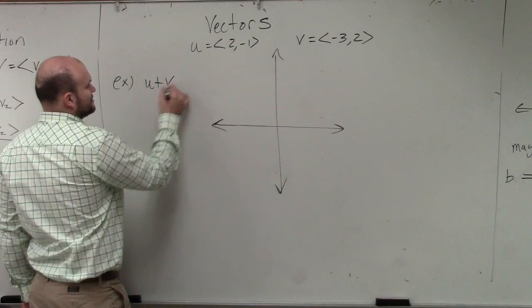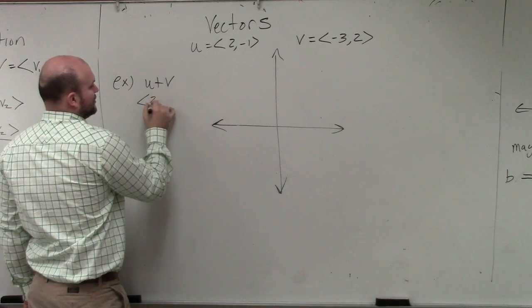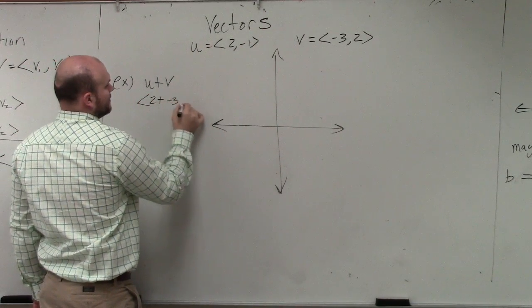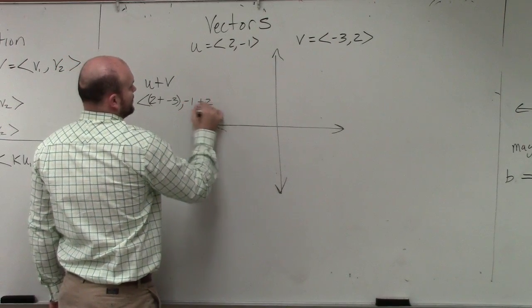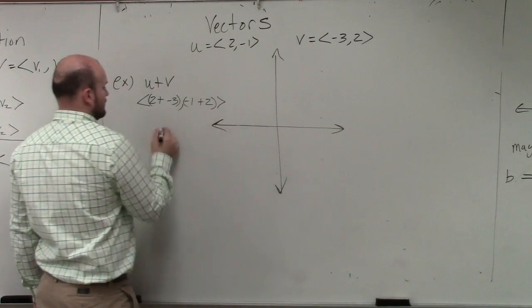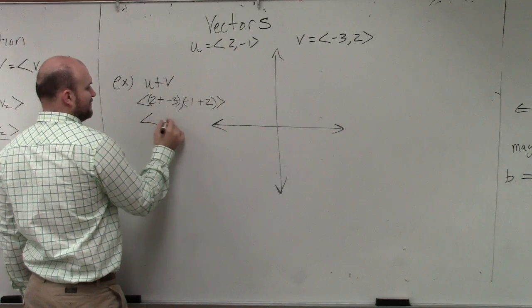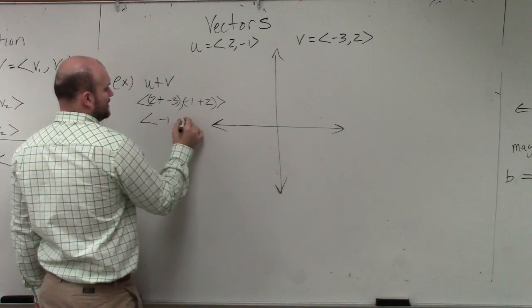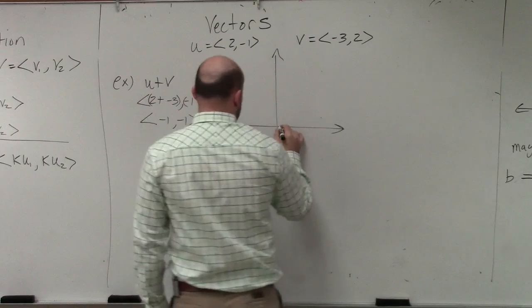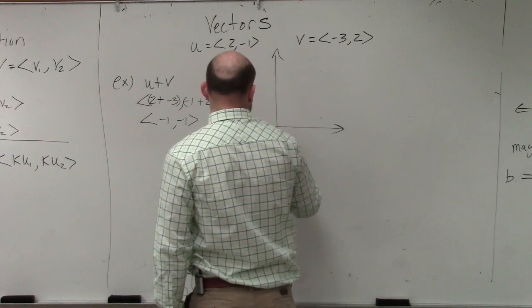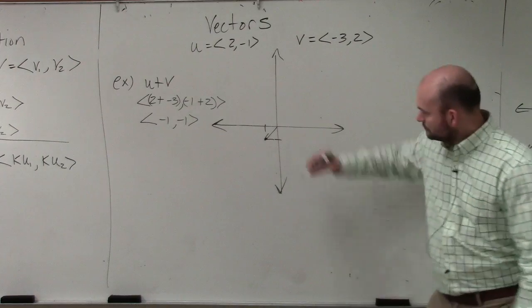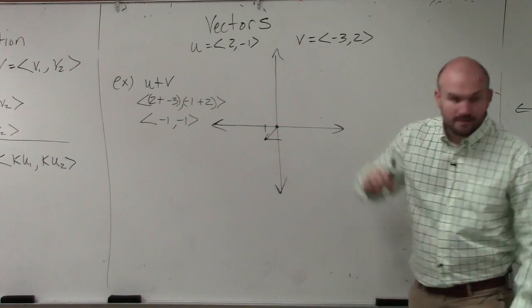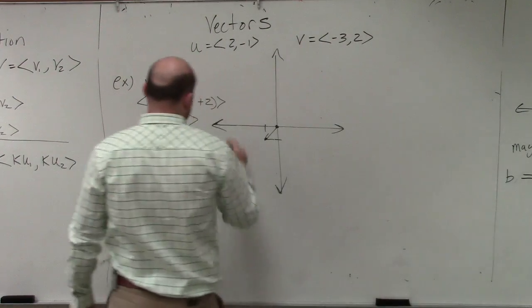So in this case, it's basically going to be vector u plus negative 3 comma negative 1 plus 2. So therefore, that gives me negative 1 comma negative 1. That is my vector u plus v.